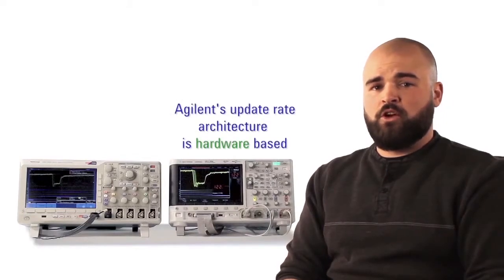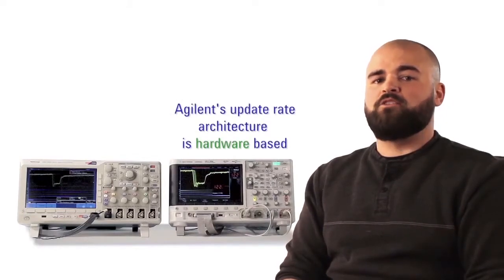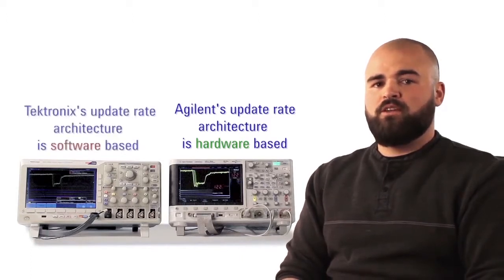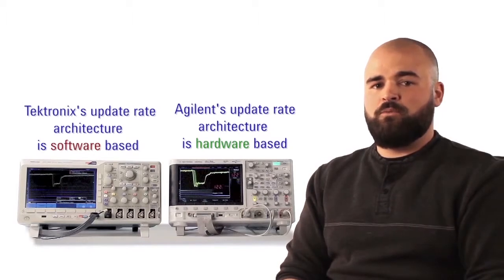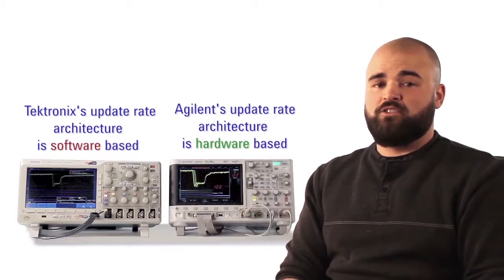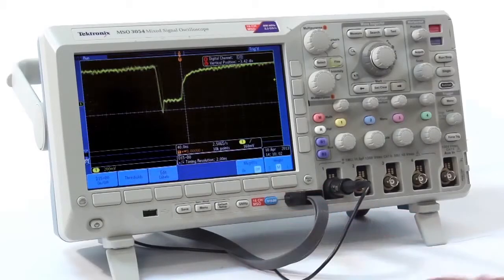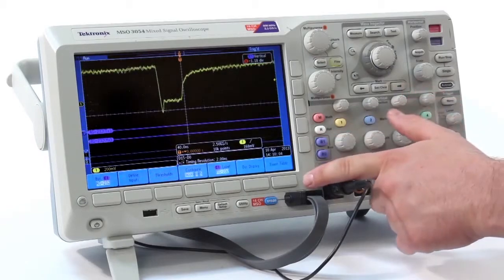Agilent and InfiniVision oscilloscopes have a fast update rate and smart memory management thanks to our patented MegaZoom 4 ASIC technology. Alternatively, Tektronix utilizes a CPU-based architecture, which is why turning on digital channels and serial decode will slow down the system. These extra features should help you find problems, not hide them.